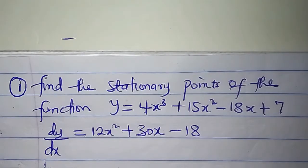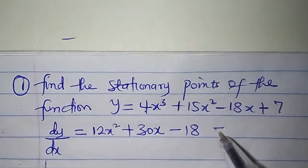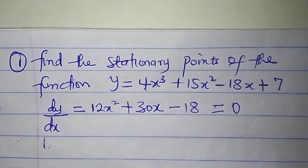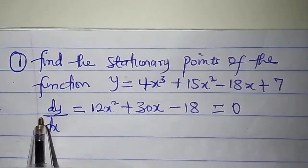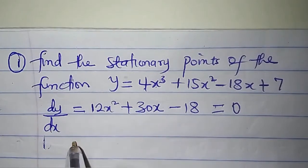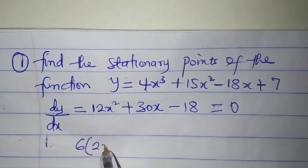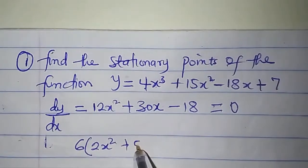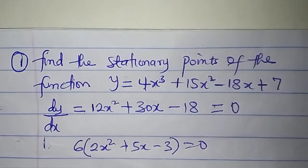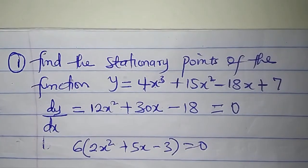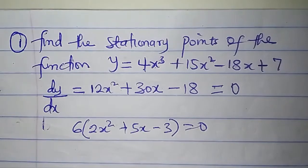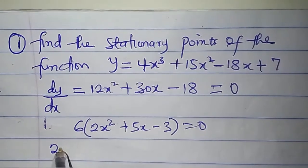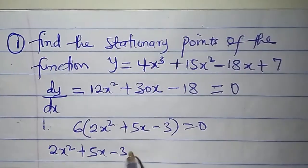At the stationary point, dy/dx is equal to zero. I will set this to zero — this is a quadratic equation and I'll have to solve it for x. I can see that 6 can be factored out from the left-hand side, giving 6(2x² + 5x - 3) = 0. If I divide both sides by 6, I'll have 2x² + 5x - 3 = 0.